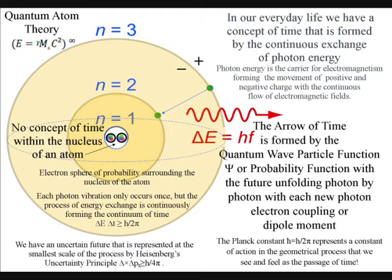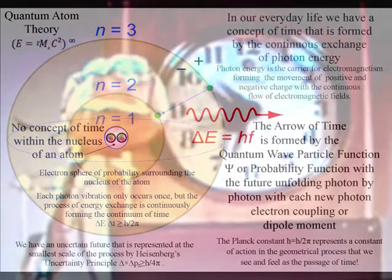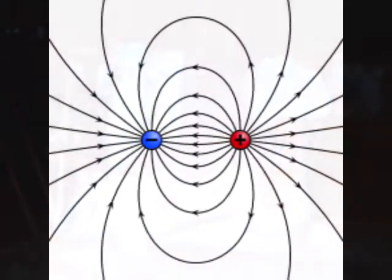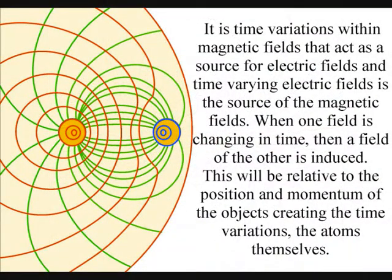Each photon-electron coupling or dipole moment only occurs once, but the process of energy exchange is continuously forming the continuum of time. This process forms the movement of positive and negative charge with the continuous flow of electromagnetic fields in three-dimensional space.